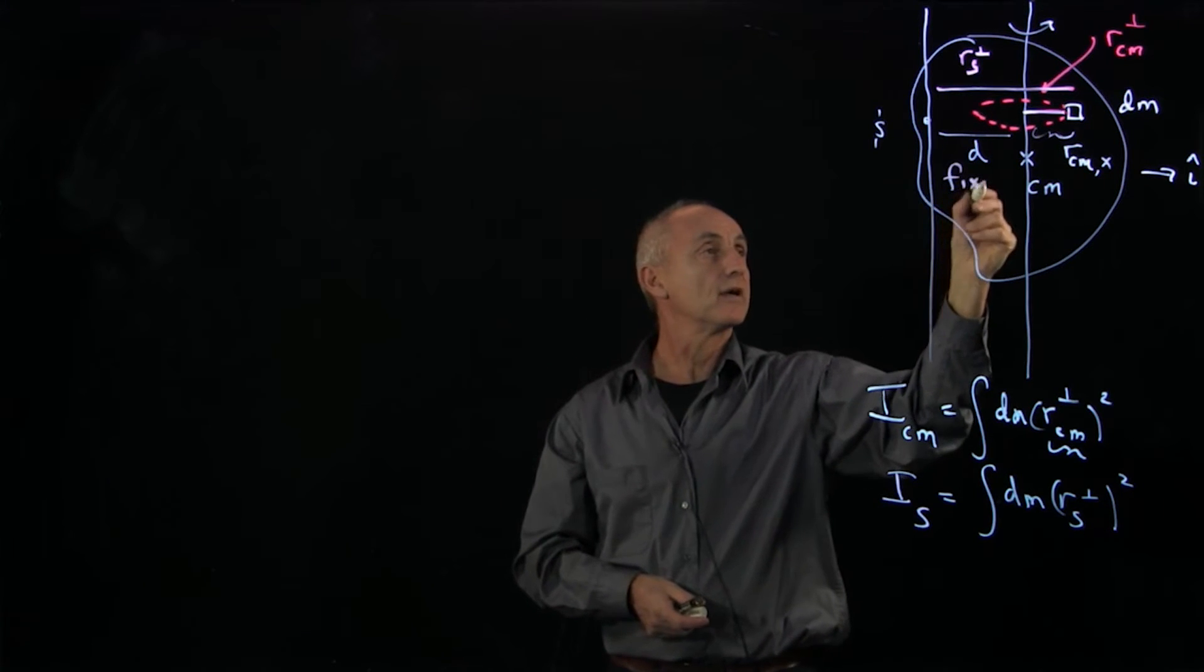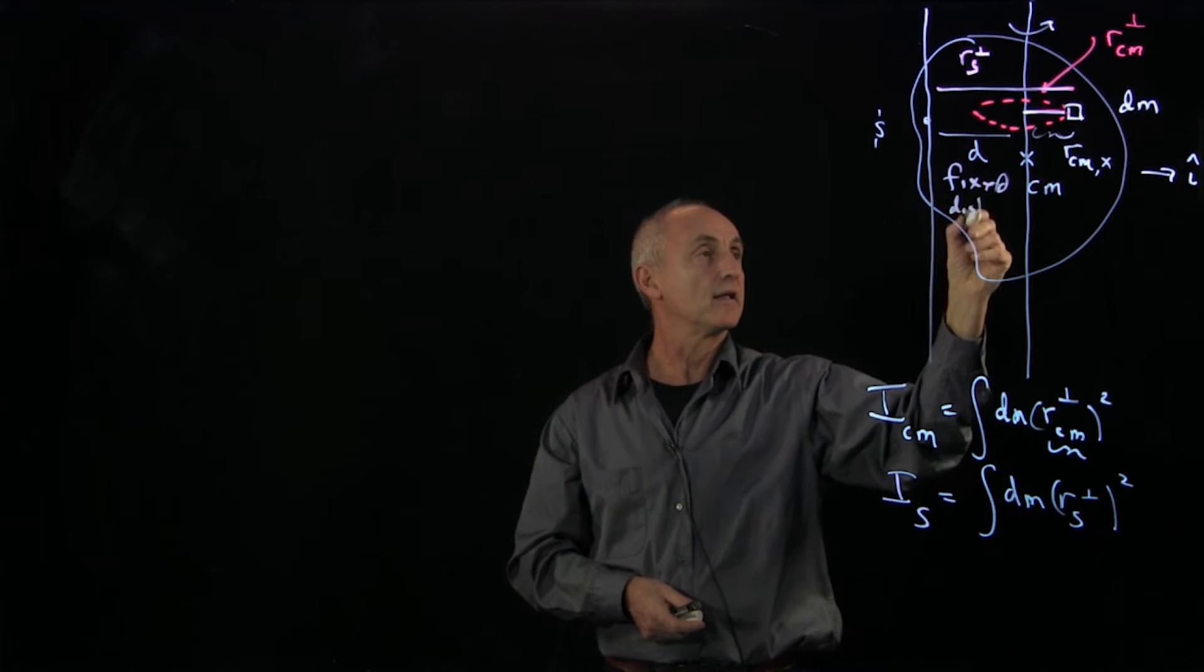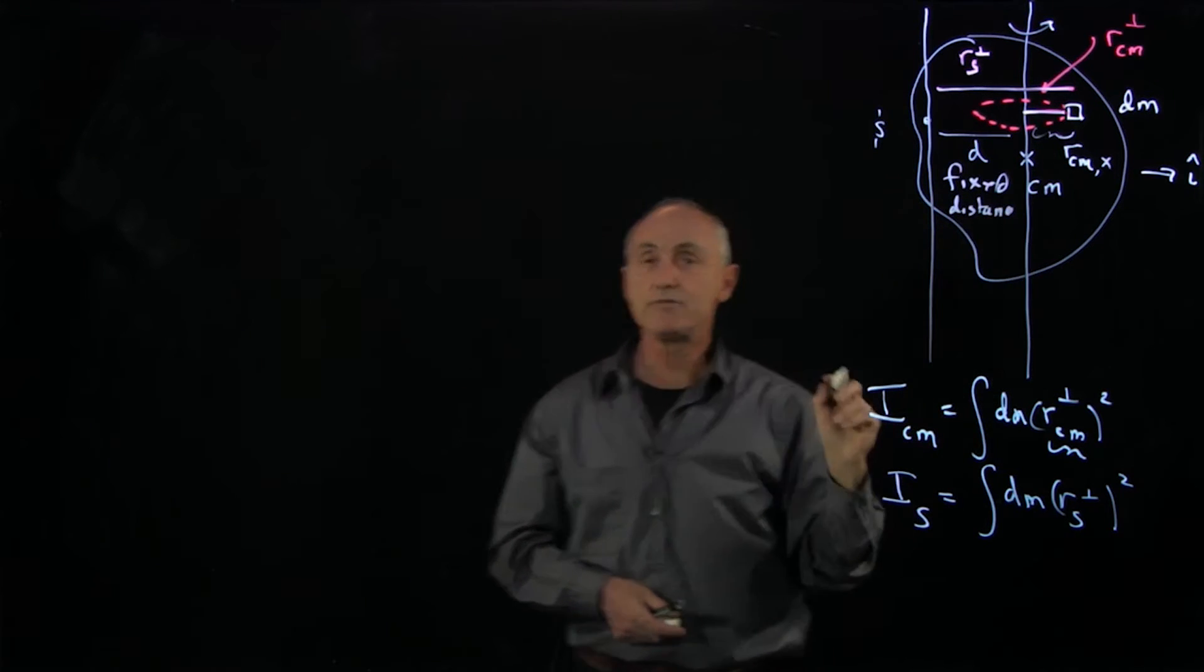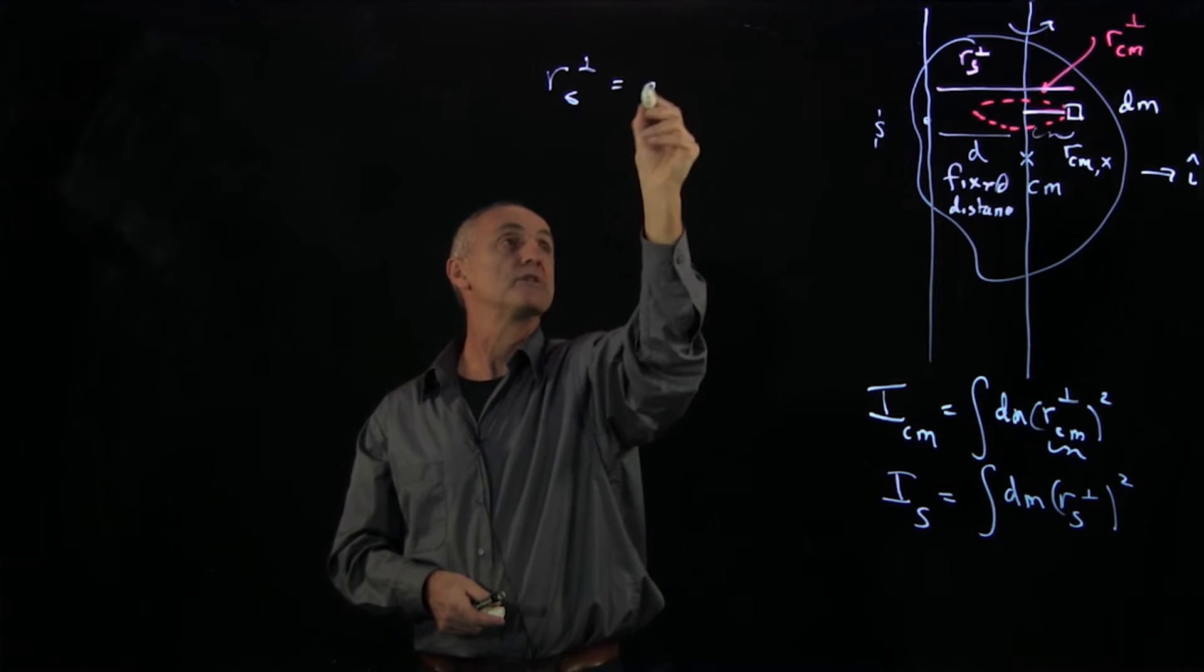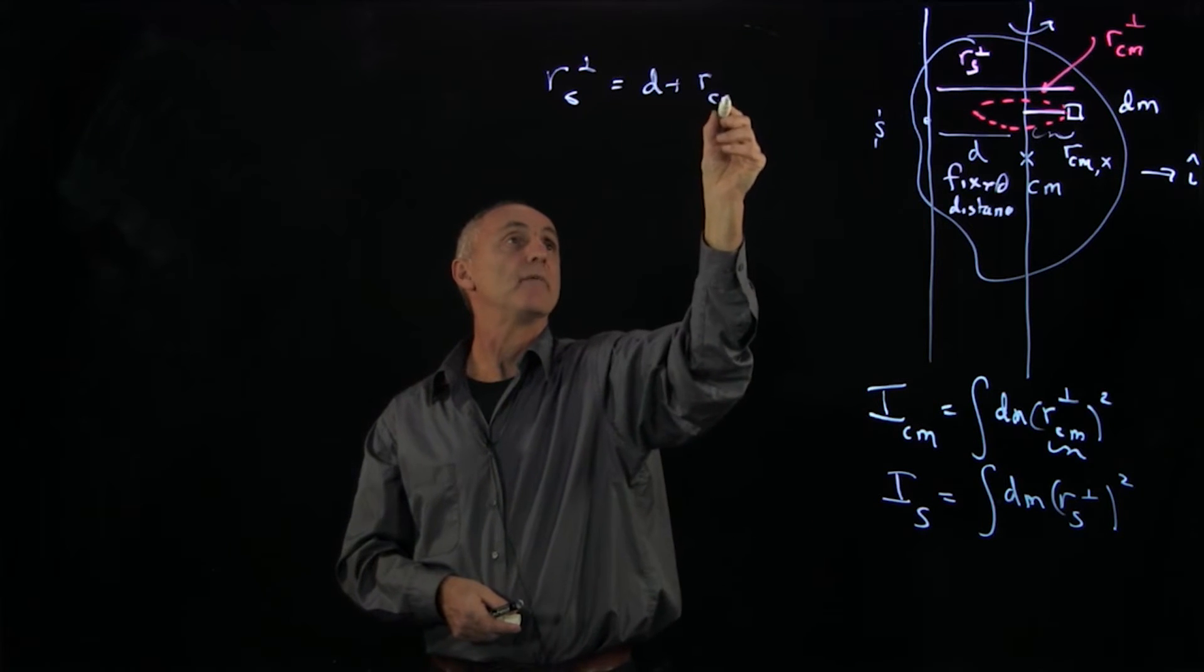So how do I relate these distances? Well, d is a fixed distance. And you can see from my diagram that r_s_perp is equal to d plus r_cm_x.